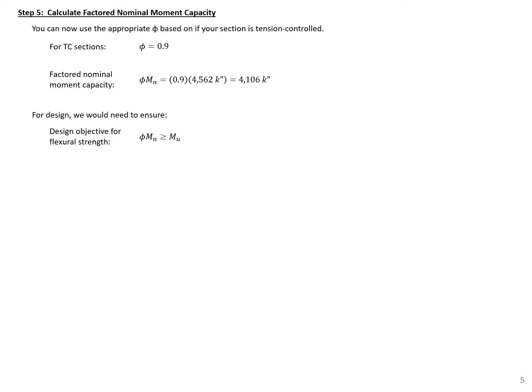Because we're tension-controlled, we'll use a phi equal to 0.9. So our factored nominal moment capacity will be 0.9 times our nominal moment, which equals 4,106 kip-inches. If we were doing design, we would need to make sure that our factored nominal moment is greater than our demand along the entire length of the beam. We're not given any information on the loading, so we're not going to do that check here.